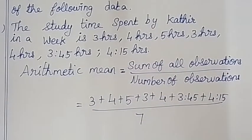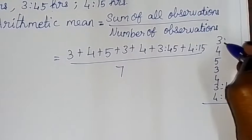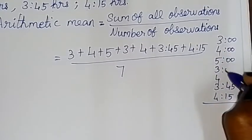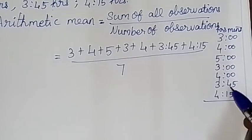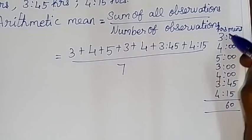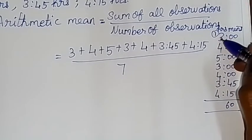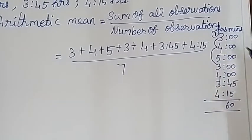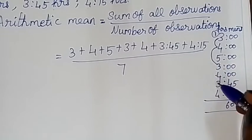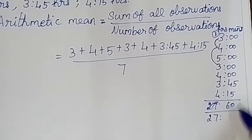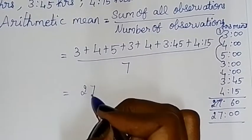Then add the values. If you add hours and minutes, you add hours and minutes separately. First, add the minutes: the minutes add up to 60 minutes, which is 1 hour. Convert that and carry over 1. Now adding hours: 3 plus 4 is 7, plus 3 is 10, then 10 plus 5 plus 1 carry is 16, plus 4 is 20, plus 7 is 27 hours. So the total is 27 hours divided by 7.